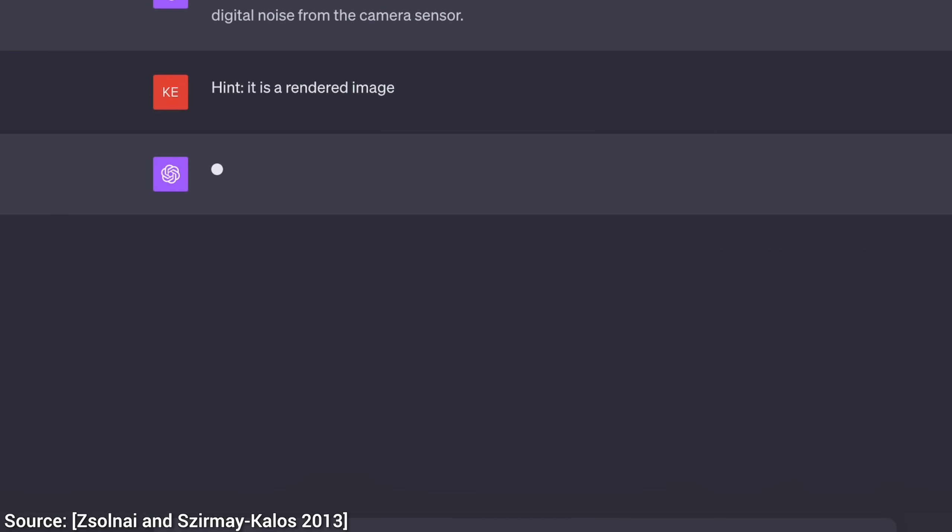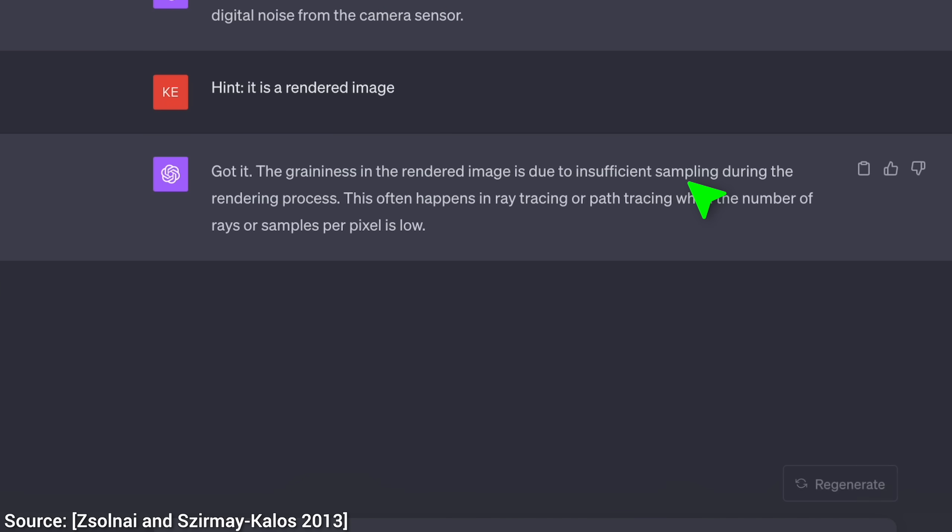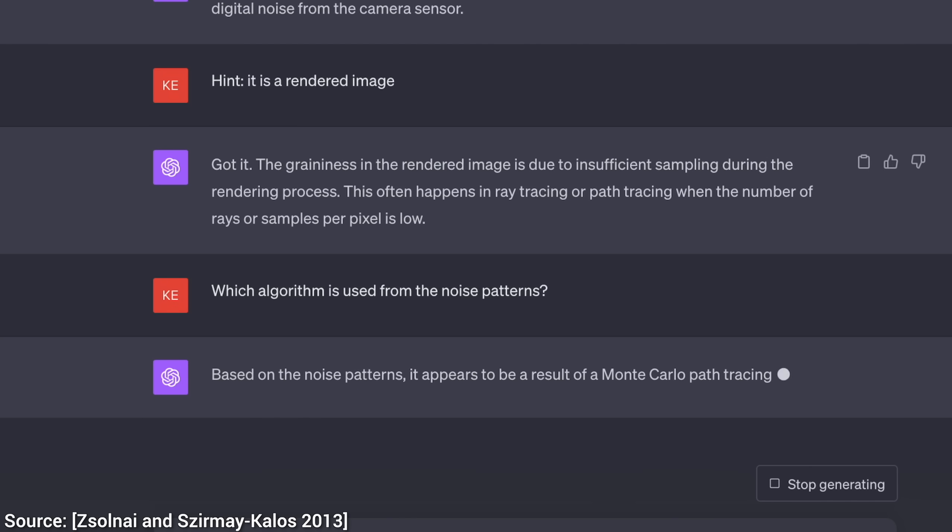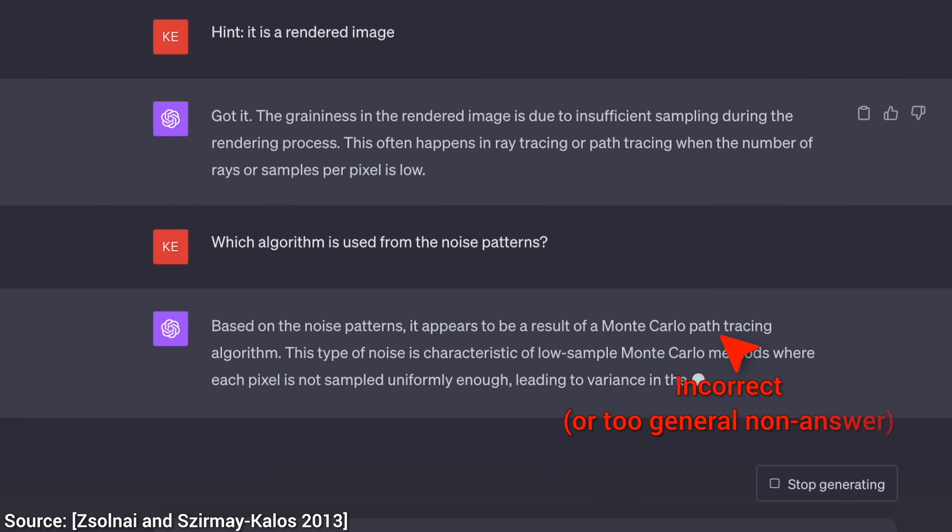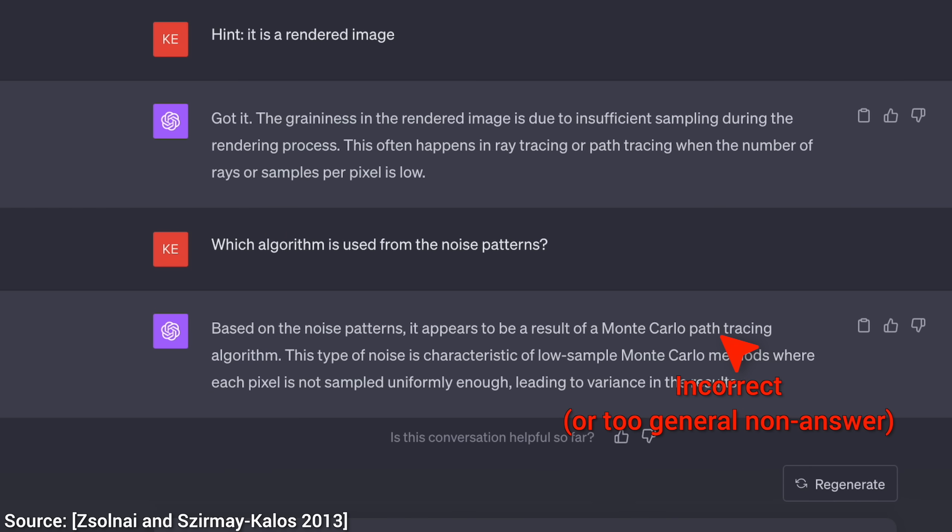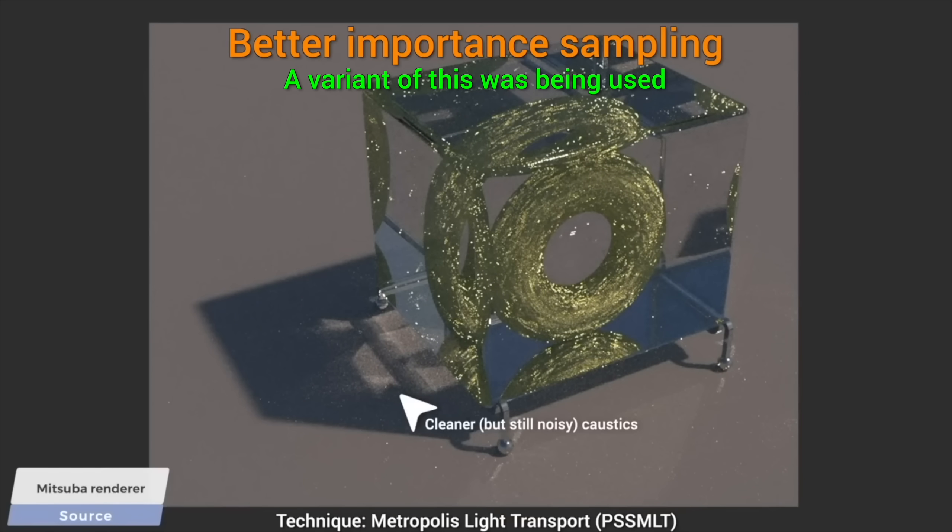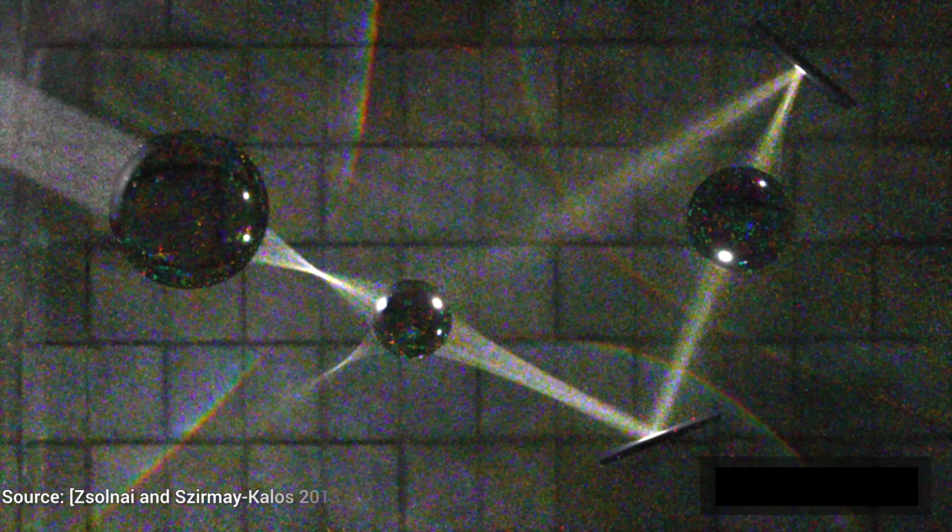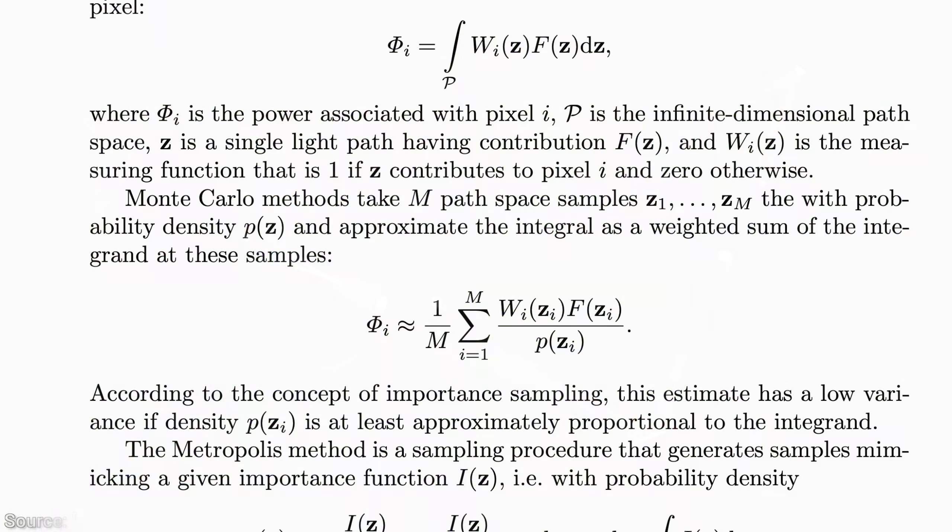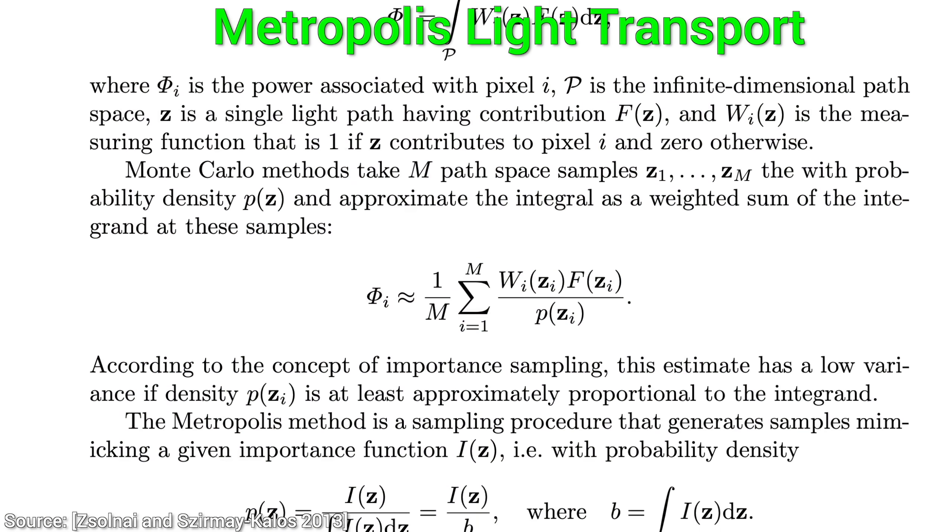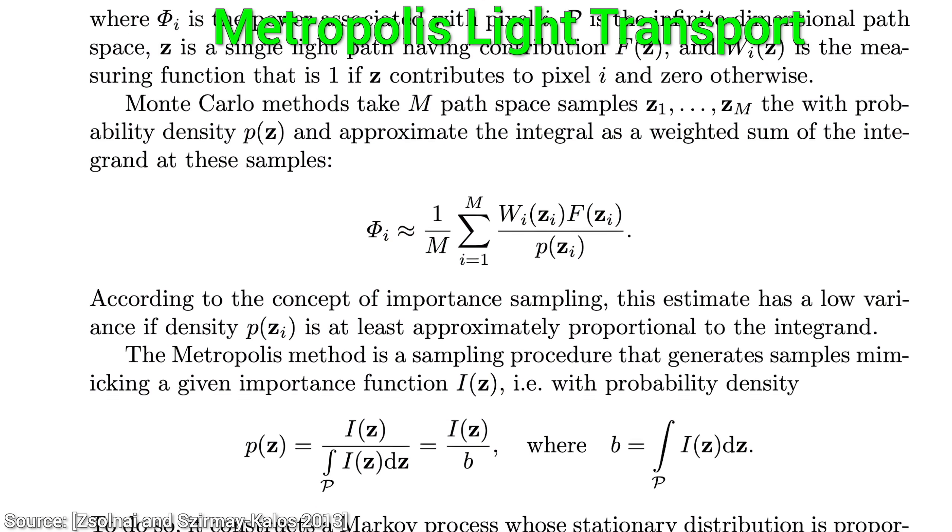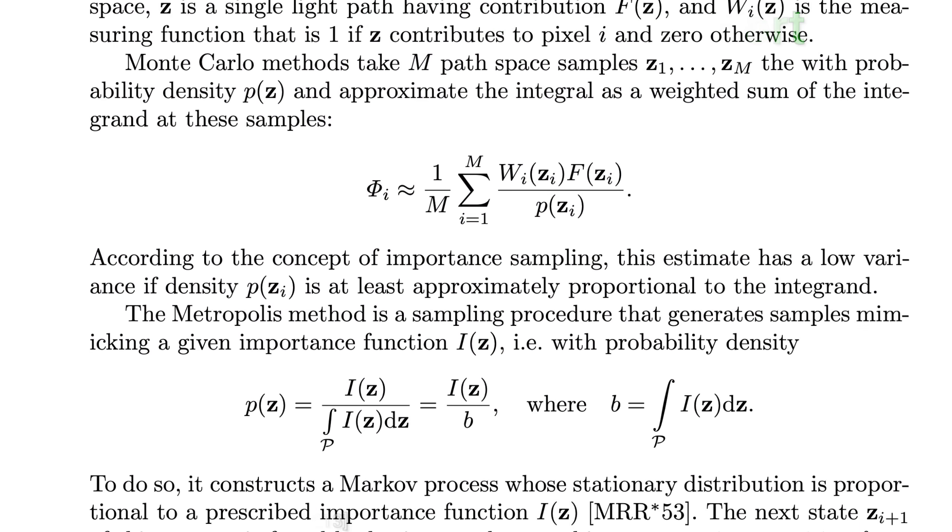Now, let's give it a little hint. Now, it is picking up that this was a light simulation program, but still doesn't know which algorithm it is based on. Well, luckily, each algorithm has its own fingerprint. Its own noise patterns. This one is clumpy and correlated. Yup, this means that it is a variant of the legendary Metropolis light transport algorithm. Our paper on it is available in the video description.